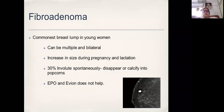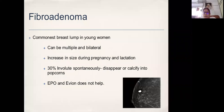Fibroadenomas are very common in young women. They can be multiple, bilateral, and they behave like breast tissue — because they are breast tissue. They contain TDLUs, more in number and bigger in size, encapsulated in one particular area. They do not communicate with the ductal system. In response to hormones, they will also change. During pregnancy, TDLUs normally 1–2 mm in size can increase up to 4–5 mm because their job is to make milk. The TDLUs within the fibroadenoma also increase during pregnancy and lactation — in fact, it can produce milk.